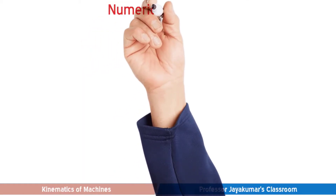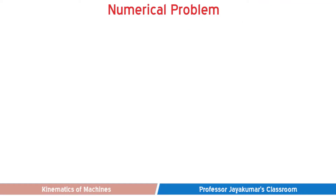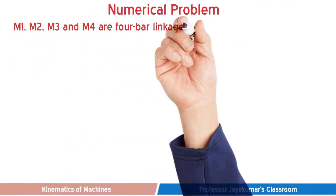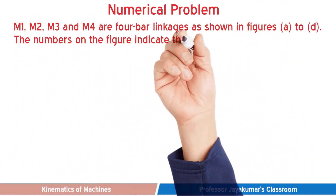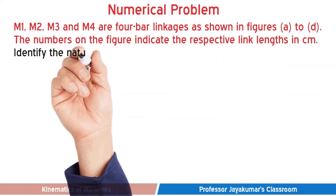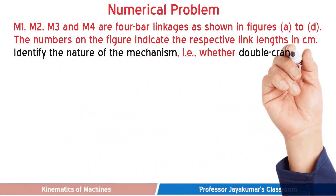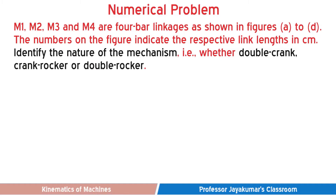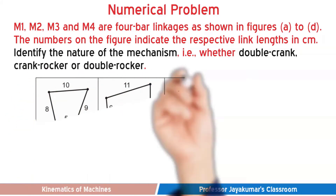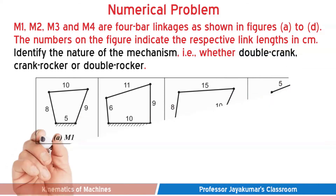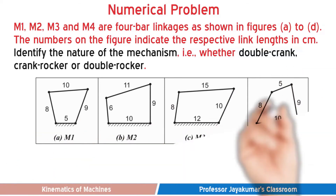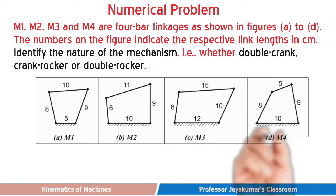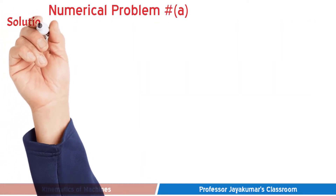Now we are all set to solve a numerical problem. In this problem, four 4-bar linkage mechanisms — namely M1, M2, M3, and M4 — are given. The numbers in the figures indicate the respective link lengths in centimetres. We need to identify the nature of the given mechanisms — whether they are Double-Crank, Crank-Rocker, or Double-Rocker mechanism. Now let us move on to the solution section.